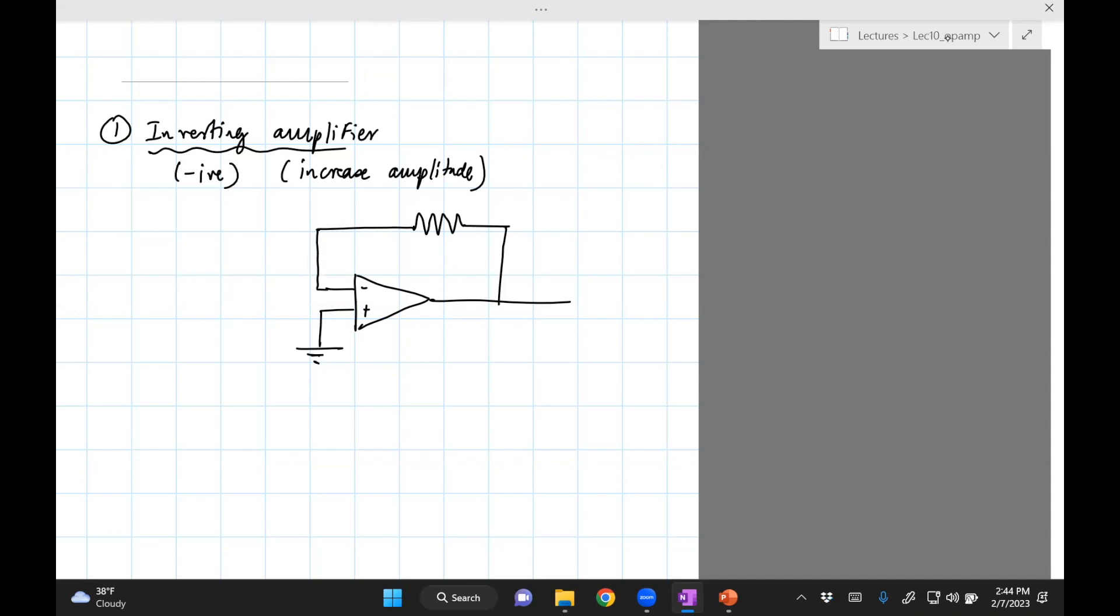Inverting means the negative terminal. Then connect our resistor to a voltage source. So this is our input. Let's call this R, let's call this RF, and this is V_out.